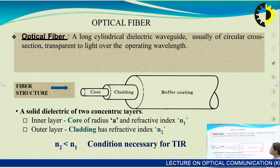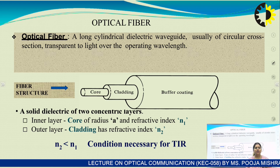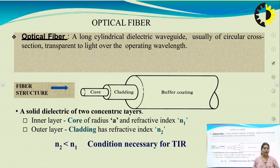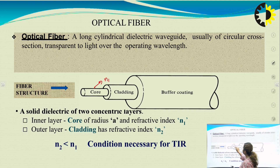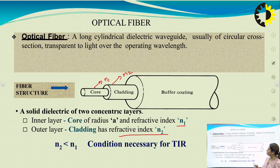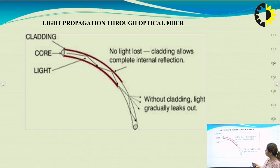An optical fiber is a long cylindrical dielectric waveguide, usually of circular cross-section, transparent to light over the operating wavelength. It has an inner core of radius A and refractive index N1, and an outer cladding of refractive index N2, with a buffer coating above the cladding. The necessary condition is that N1 must be greater than N2 — the refractive index of the core must be greater than that of the cladding — for total internal reflection (TIR) to occur.